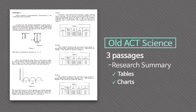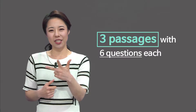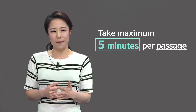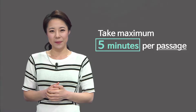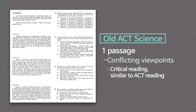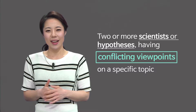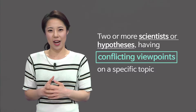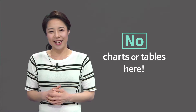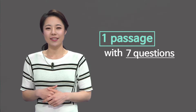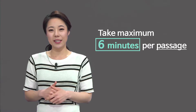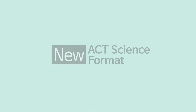Three passages are from research summary, which shows the process and results of experiments. You do see charts and tables, but less than in data representation. Each passage has six questions, so I recommend a maximum of five minutes per passage. One passage is from conflicting viewpoints, which deals with critical reading — two or more scientists with differing views on a topic. With seven questions, I recommend a maximum of six minutes for that passage.